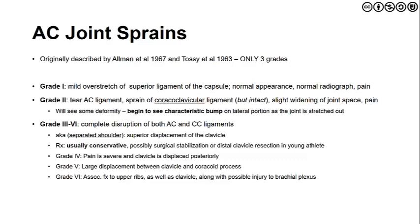Grade three involves complete disruption of both the acromioclavicular ligament and the coracoclavicular ligament — both the conoid and trapezoid portions. This is referred to as a separated shoulder; displacement of the clavicle is superior as there are no static stabilizers to restrain its movement. Treatment is usually conservative, managing symptoms and inflammation and gradually returning to activity. In rare cases, surgeons will surgically stabilize or resect the distal clavicle if symptoms cannot be mitigated through conservative treatment.